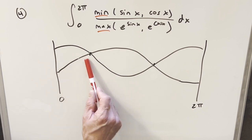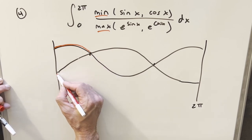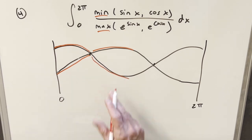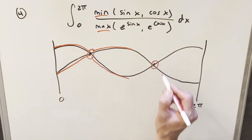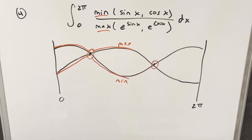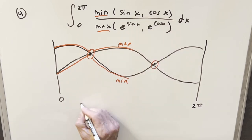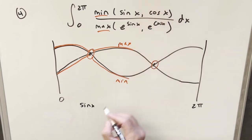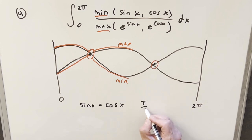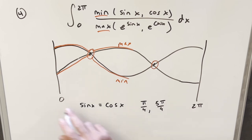In each region between intersection points, there's going to be a min value and a max value of the two functions. So in the first region the top curve is our max function and the lower curve is our min, and then it switches. We need to find these intersection points — for sine x and cosine x, that's where sine x equals cosine x, which happens at pi over four and five pi over four within the range zero to two pi.